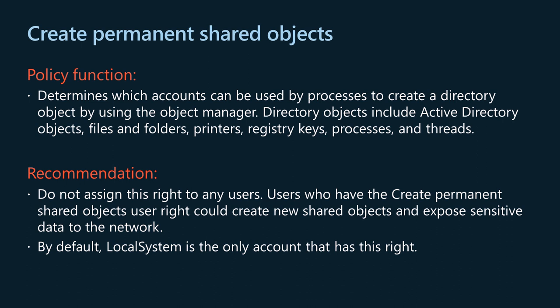The create permanent shared objects user right determines which accounts can be used by processes to create a directory object using the object manager. Directory objects include Active Directory objects, files and folders, printers, registry keys, processes, and threads. Users with this capability can create permanent shared objects including devices, semaphores, and mutexes. This user right is useful to kernel mode components that extend the object namespace. Because components running in kernel mode inherently have this user right, it is not necessary to specifically assign it. Do not assign this right to any users, as it could expose sensitive data to the network. By default, local system is the only account with this right.